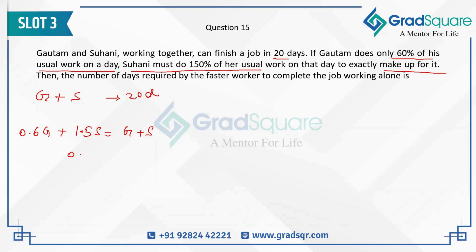0.5 times S should be equal to 0.4 times G. So S divided by G is going to be 4 by 5.